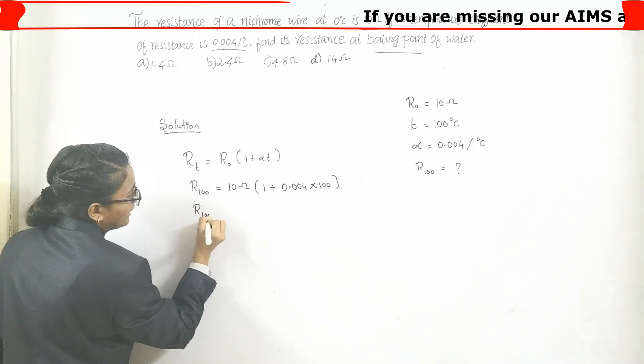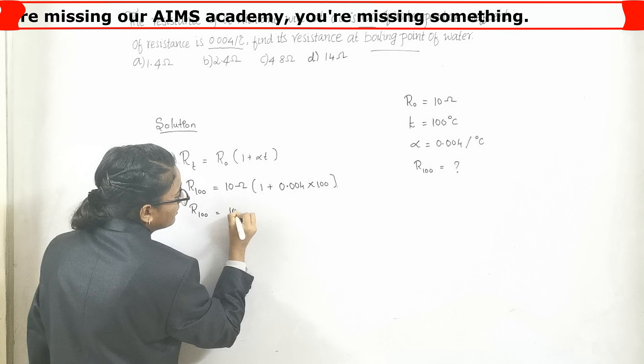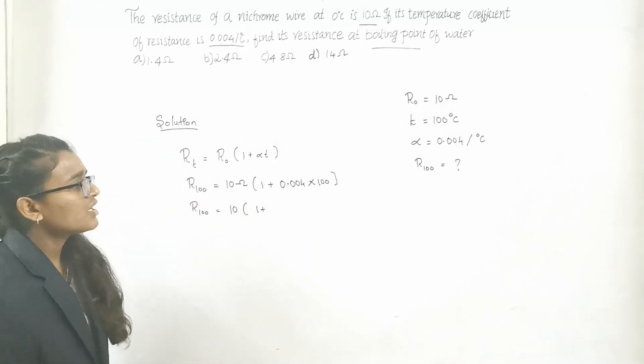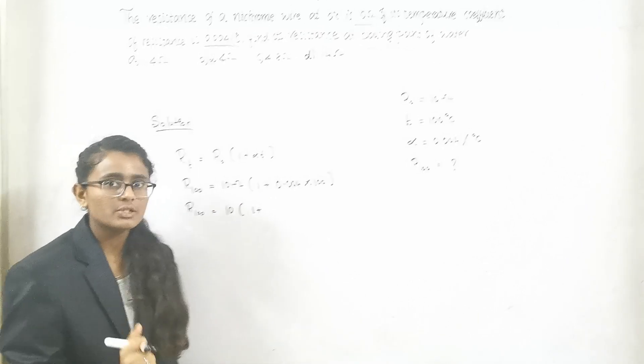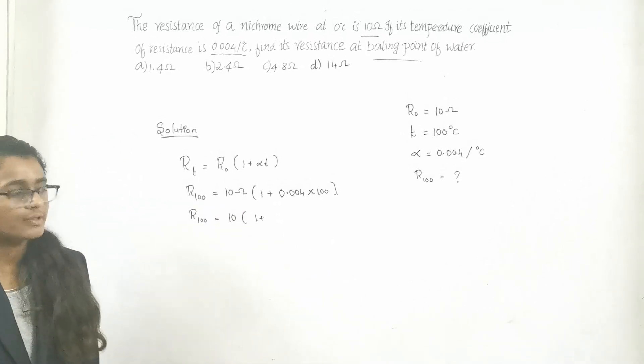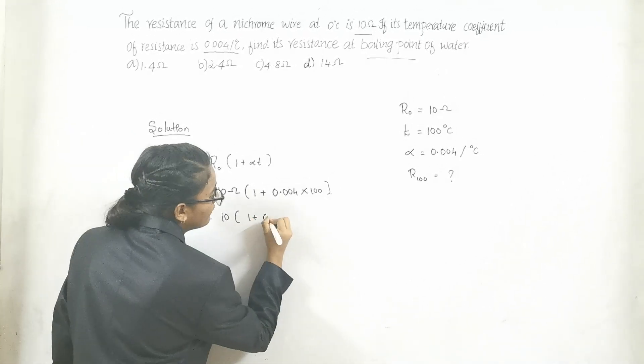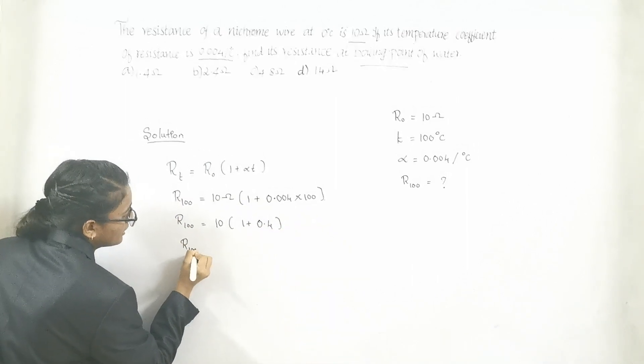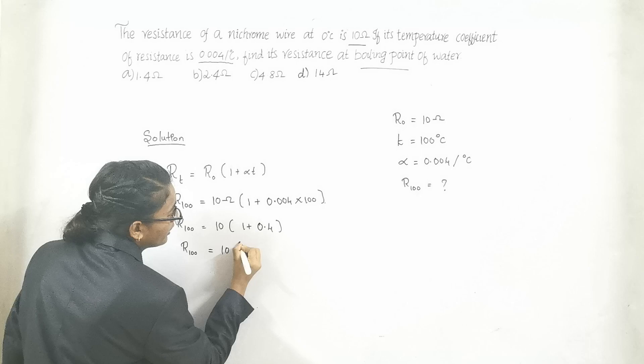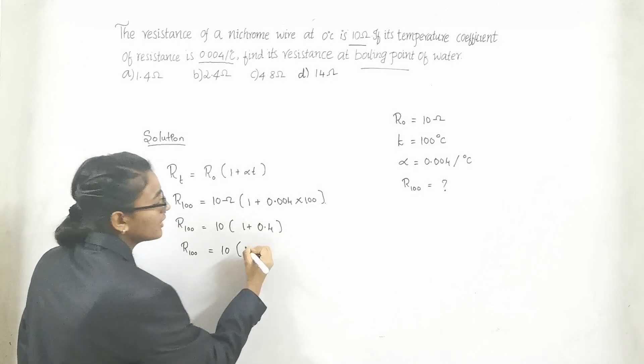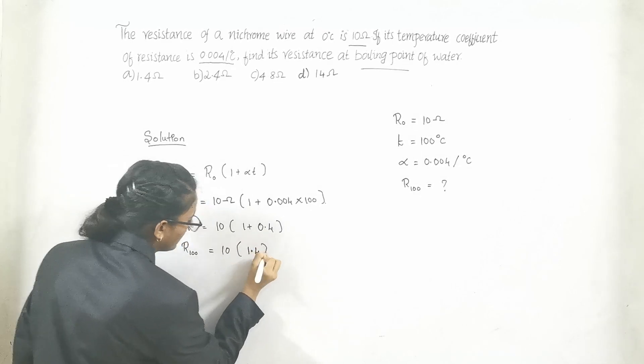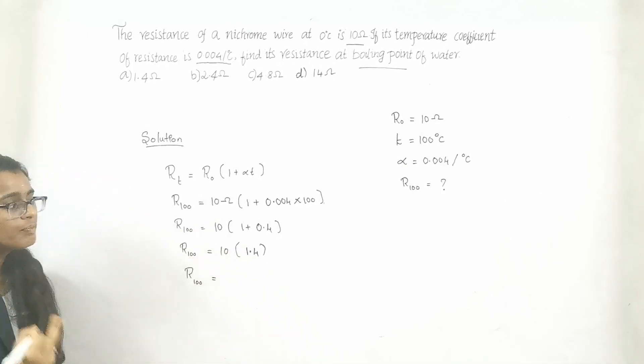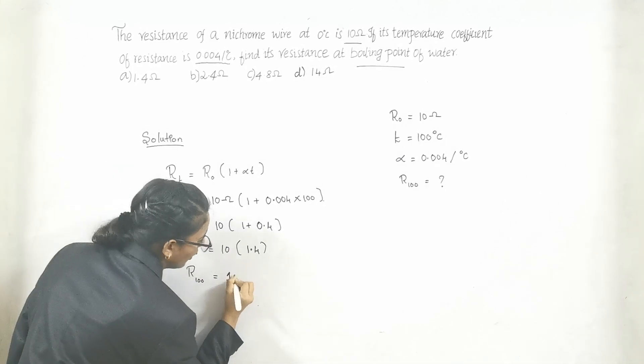R_T equals 10 into 1 plus, do you know the multiplication of 0.004 into 100? Hope you know that. That is 0.4. R_T equals 10 into (1 + 0.4), which is 1.4, equals 10 into 1.4 is 14 ohms.